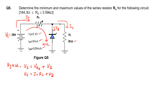We ask ourselves what is fixed or unfixed in this equation. Vz is given as 3.3 volts — a fixed value. The voltage source Vs is also fixed at 20 volts. So It is the unfixed value we need to find. Deriving the equation for RS first: RS equals (Vs minus Vz) over It.